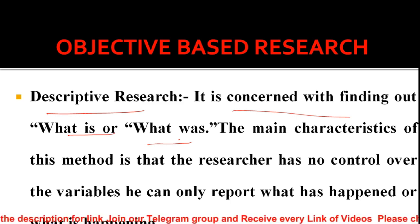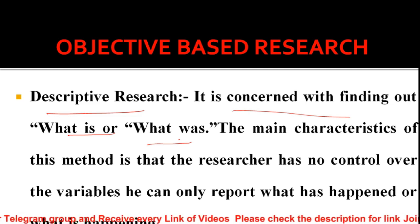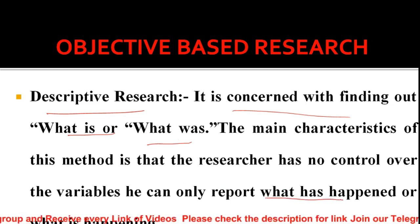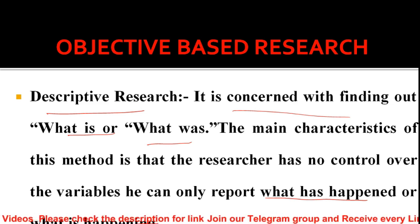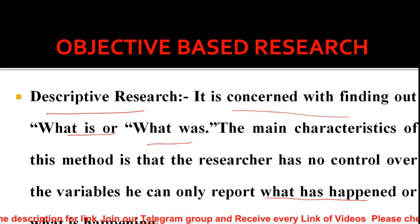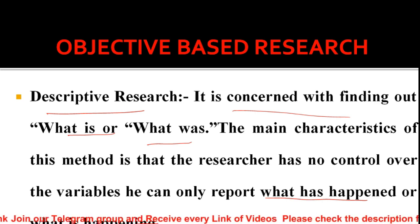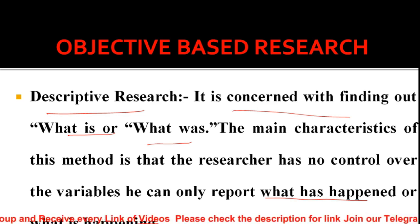Descriptive research is based on what has happened or what is happening. The researcher reports only those things - what has happened or what is happening. It provides detailed information about variables related to what is or what was happening, which is why it is called descriptive research.